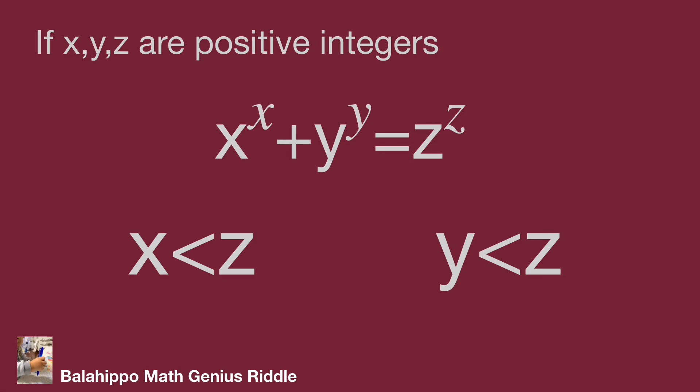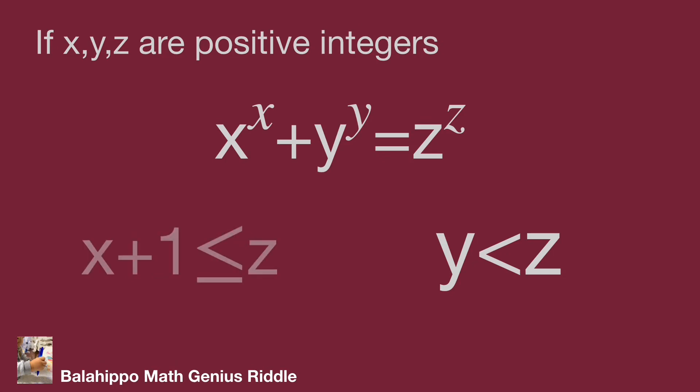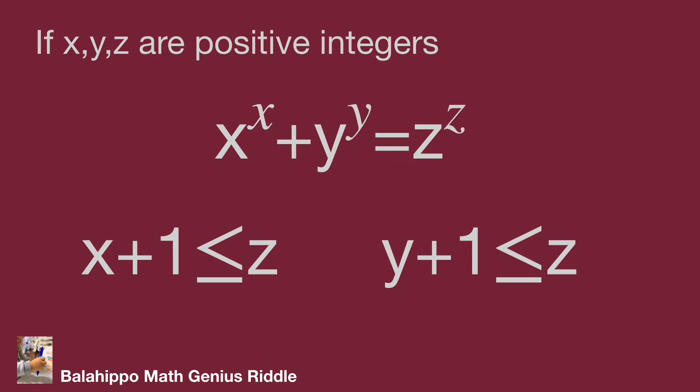From x < z, where x, y, z are positive integers, we can say x + 1 ≤ z. By the same idea from y < z, we get y + 1 ≤ z.